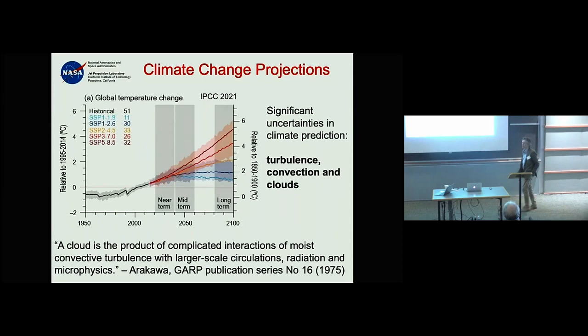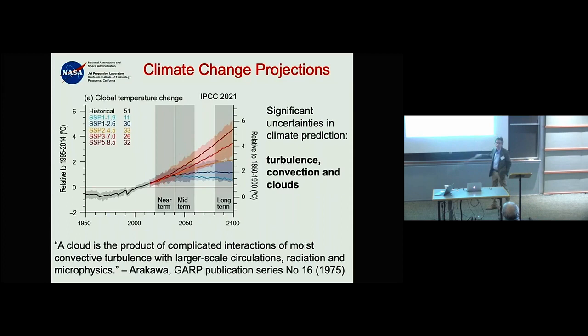Even within a single plausible scenario, say the red line, when you have 25 models from different organizations around the world, you still have a huge amount of variability. Models will predict that in about 80 years warming will be three degrees Celsius in one case, six degrees Celsius in another.